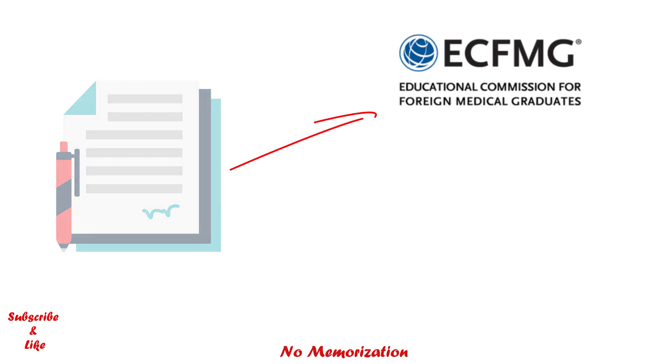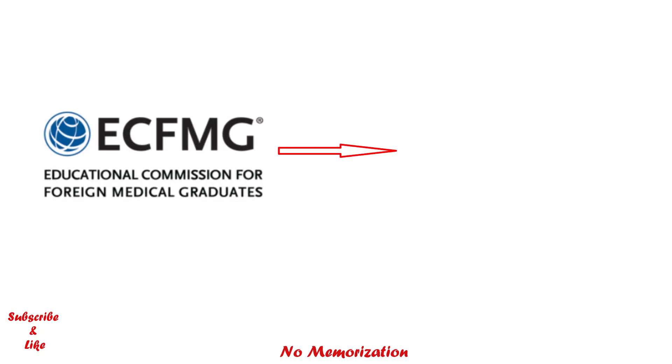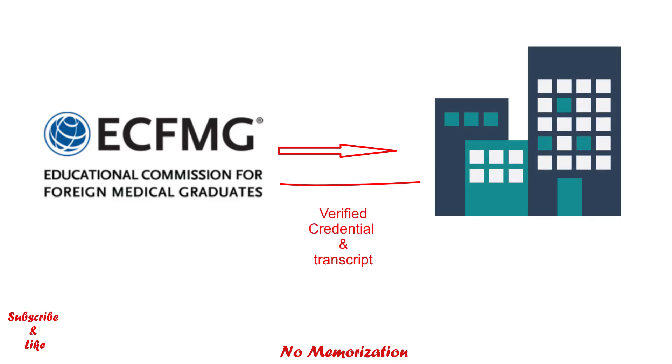So how does it work? You can send your final medical degree to ECFMG by mail or upload it through the ECFMG credential upload tools. After that, ECFMG will send this medical diploma to your medical school for verification. In addition, ECFMG will also request your medical school to provide your final medical school transcript.